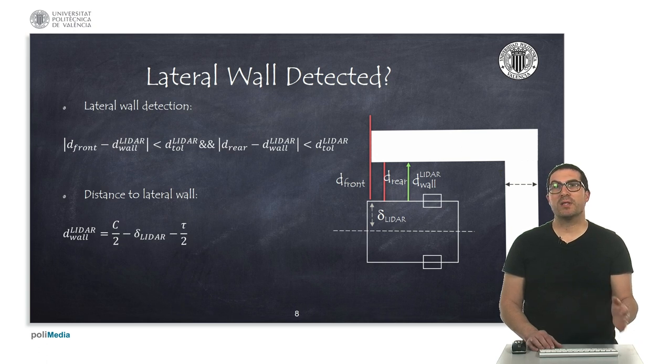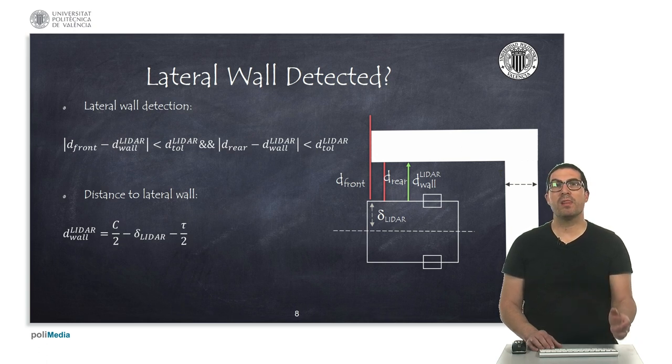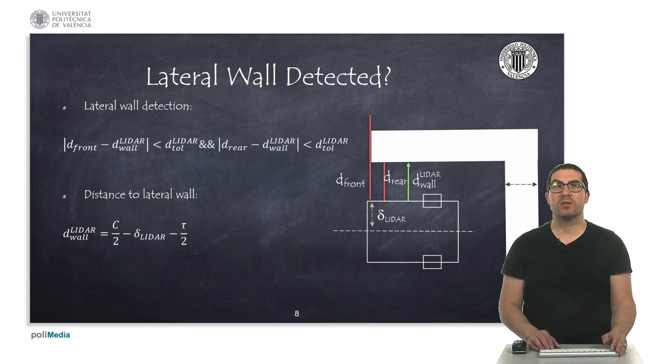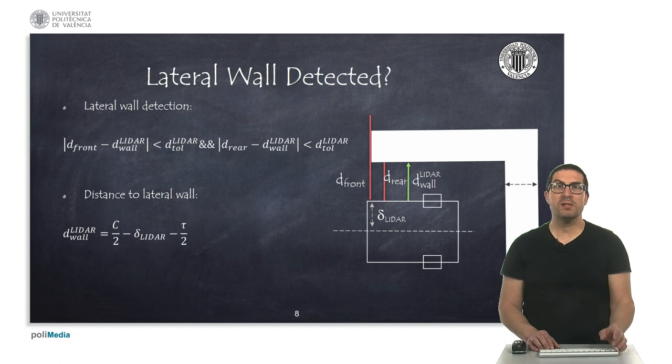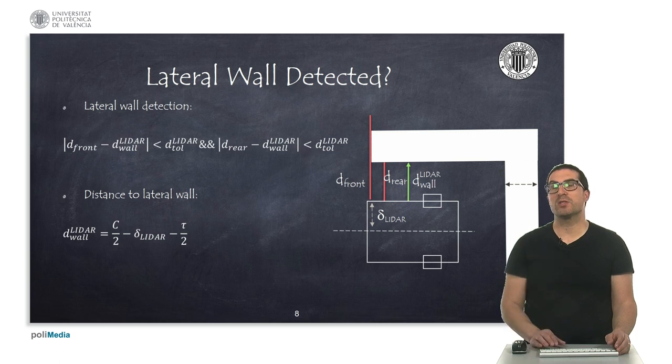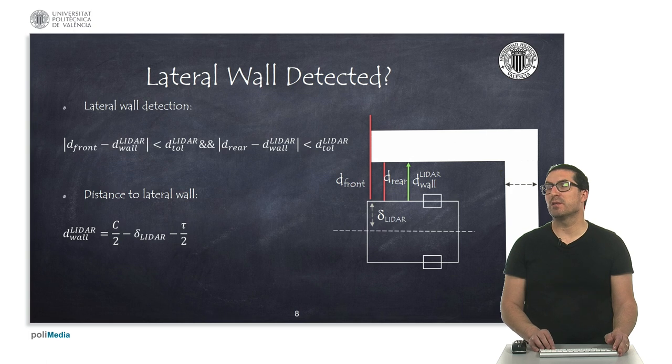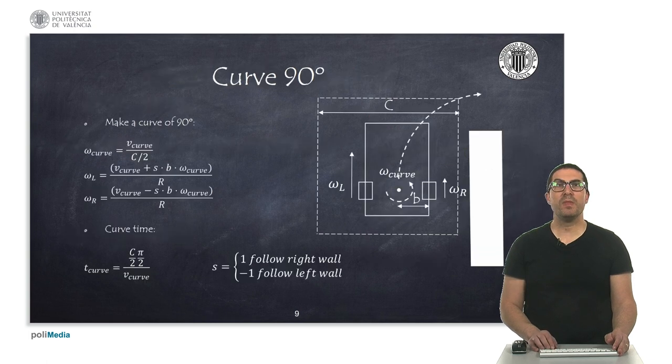If one of the sensors does not detect a wall, then what we have to do is make a turn of 90 degrees. The expected lateral distance depends on the size of the maze cells and the wall thickness, but also on the lateral separation of the sensors with respect to the robot central line, as you can see here, indicated by the letter delta_lidar.